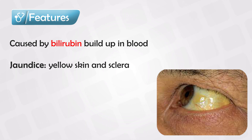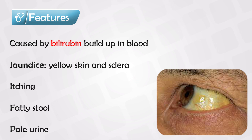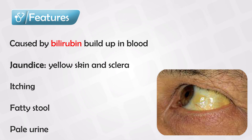They will also have itchiness, steatorrhea — which is fatty stool — and pale urine. These are the most striking features of jaundice.